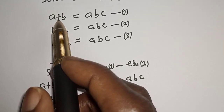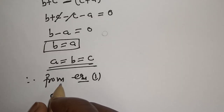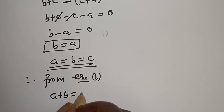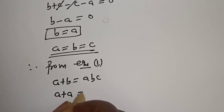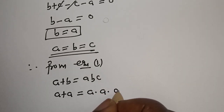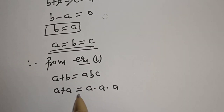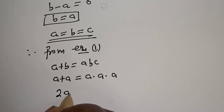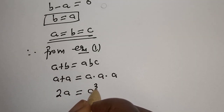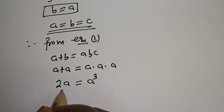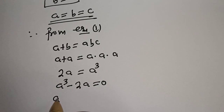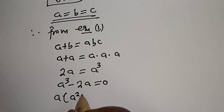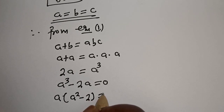Now from equation one, a plus b is equal to abc. Since a equals b equals c, we substitute: a plus a equals a times a times a, so 2a equals a cubed. Bringing to one side: a cubed minus 2a equals zero. Factoring out a: a times (a squared minus 2) equals zero.